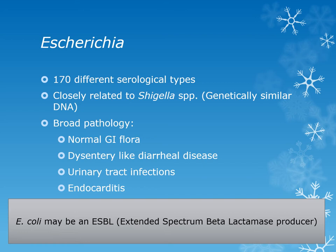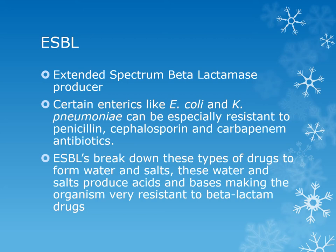E. coli might also be an extended spectrum beta-lactamase producer. Beta-lactamase positive organisms are resistant to penicillin, ampicillin, and first generation cephalosporins. But in ESBL E. coli, or in some cases Klebsiella, the ESBLs are resistant to penicillin and our third and fourth generation cephalosporins. An ESBL is an extended spectrum beta-lactamase producer. Certain organisms like Klebsiella pneumoniae and E. coli are especially resistant to penicillin, third and fourth generation cephalosporins, and also the carbapenem antibiotics.